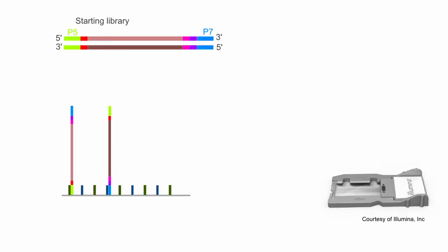When you then start sequencing, these adapters will bind to the complementary oligos on the flow cell surface and after bridge amplification there will be clusters of similar sequences.